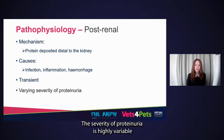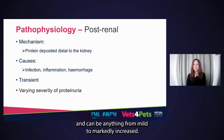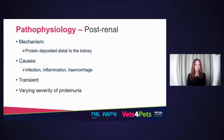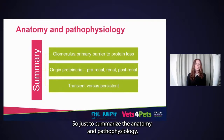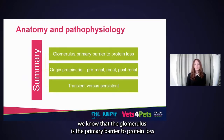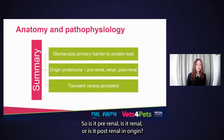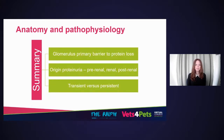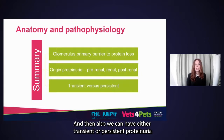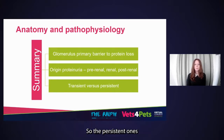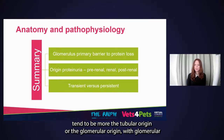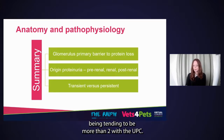To summarize the anatomy and pathophysiology: the glomerulus is the primary barrier to protein loss. It's important to think about the origin of proteinuria — is it pre-renal, renal, or post-renal? We can also have either transient or persistent proteinuria. The persistent ones tend to be of tubular or glomerular origin, with glomerular proteinuria tending to have a UPC greater than two.